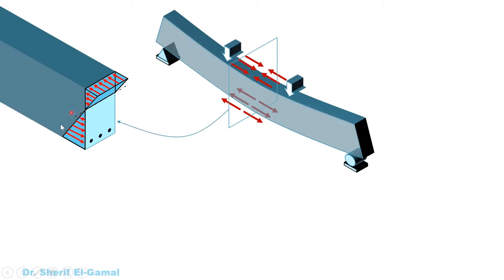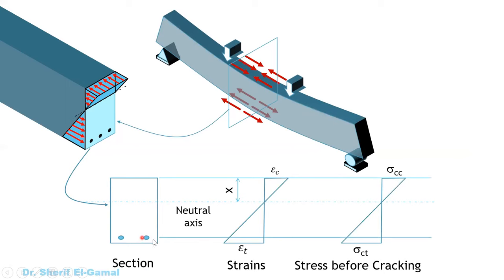Under the neutral axis we have compressive stresses, and above the neutral axis we have tensile stresses. In 2D, this shows the cross section and the reinforcement. The dotted line is the neutral axis, so the strain distribution will always be linear. At the top we have epsilon c, the compressive strains in the concrete. At the bottom layer we have epsilon t, the tensile strains in the concrete. The distance from the compression outer surface of the cross section to the neutral axis we call x.